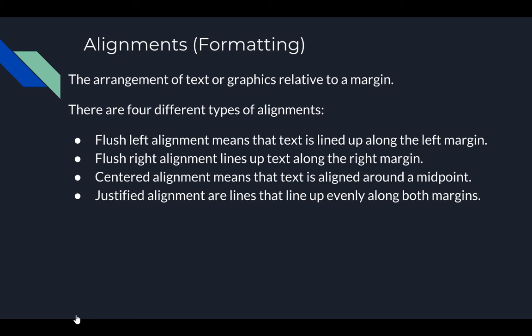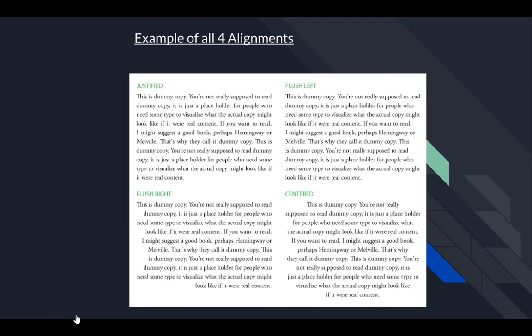Alignment is how you arrange and align text based on a margin. There are four different types: flush left, right, center, and justified. Justified means the text lines up evenly between both margins, while the others are self-explanatory — left, right, and center.